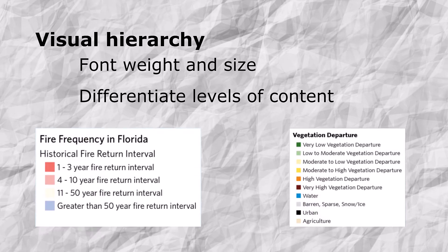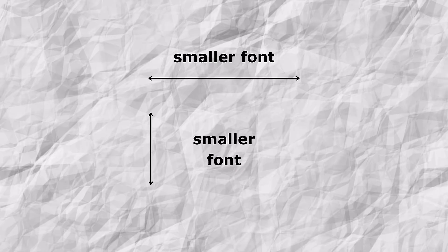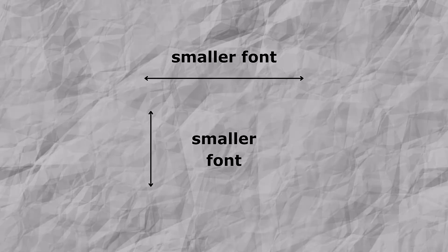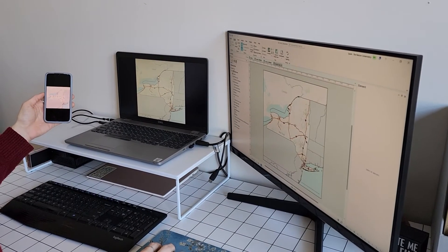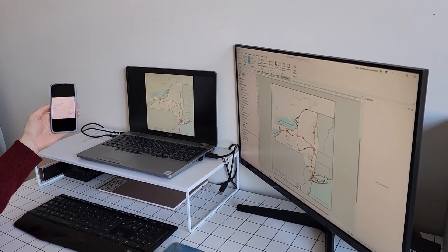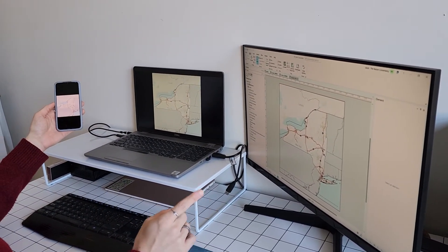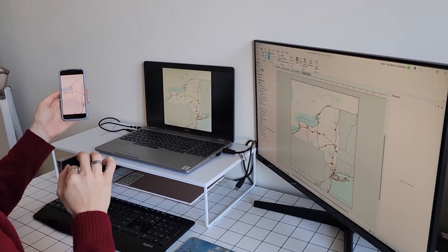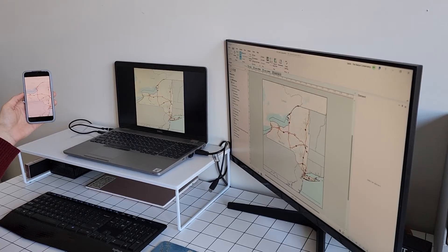To further increase readability we can add visual hierarchy between headers and class descriptions to better communicate information. Remember the smaller your font size the larger you should set the spacing between both letters and rows, as this will increase font readability at smaller scales. There aren't really any convenient tools to check font size legibility, so I recommend looking at your map labels, legends, and other text on a variety of screens at a variety of sizes to determine the ease of reading that text.